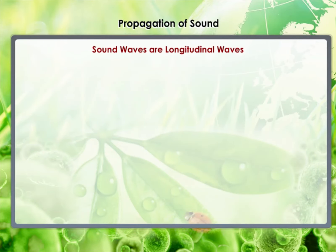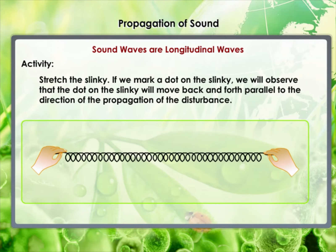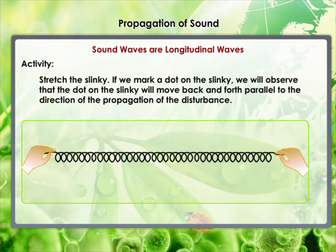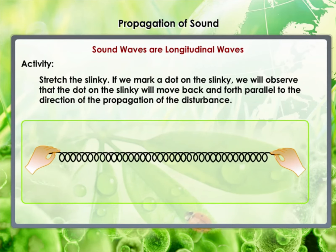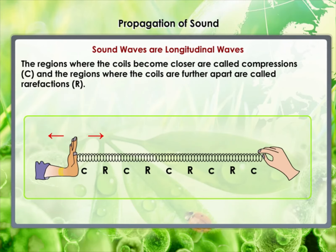Sound waves are longitudinal waves. Let's perform an activity — stretch a slinky. If we mark a dot on the slinky, we will observe that the dot moves back and forth parallel to the direction of propagation of the disturbance. The regions where the coils become closer are called compressions (C), and regions where the coils are farther apart are called rarefactions (R). In longitudinal waves, the individual particles of the medium move in a direction parallel to the direction of propagation. The particles do not move from one place to another — they simply oscillate back and forth about their position of rest. Hence, sound waves are longitudinal waves.